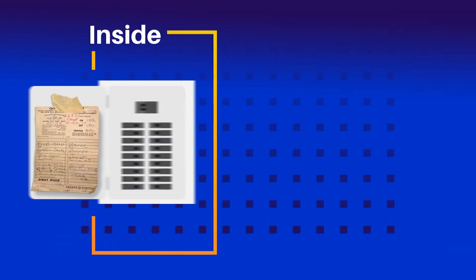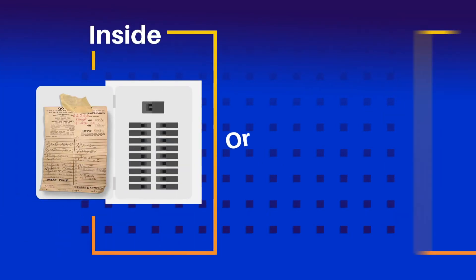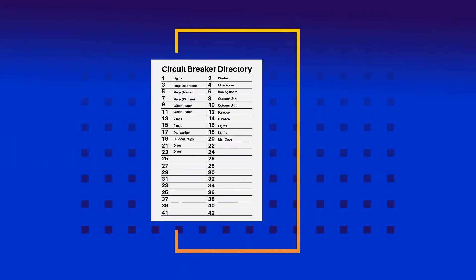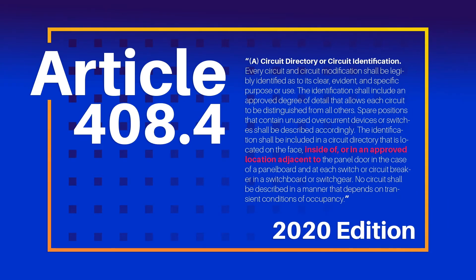Historically, panel directories were found on the inside of the door or attached to the front of the panel. Usually, directories are a template supplied with a panel board from the manufacturer. But those templates often only have a small space for the written description of the load being served. The 2020 NEC adds language that allows for the panel directory to be in an approved location adjacent to the panel board.